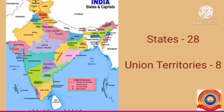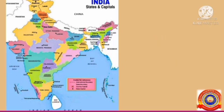Among the 29 states, Jammu & Kashmir became a union territory, namely Jammu & Kashmir and Ladakh, in October 2019. Now India has 28 states and 8 union territories. This is the latest update — all of you must update this in your textbook.